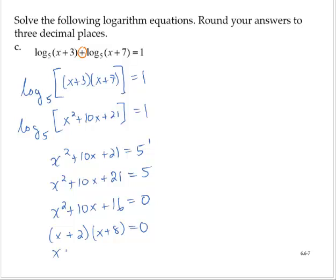Setting the factors to 0, x plus 2 equals 0, x plus 8 equals 0. This implies that x is negative 2, and x is negative 8.